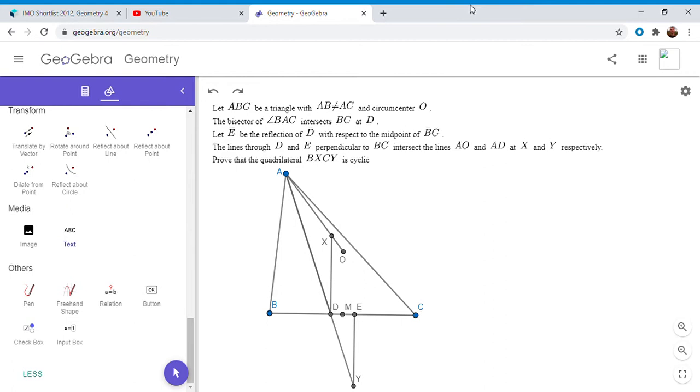It's a neat little problem that doesn't have too many initial lines and if you want to try to solve it feel free to pause the video. All right, so now I'm going to go over the solution. We have a triangle ABC with AB not equal to AC and circumcenter O. The bisector of angle BAC intersects BC at point D. E is the reflection of D with respect to the midpoint of BC. So I let M be the midpoint of BC and E is the reflection, and the lines through D and E perpendicular to BC intersect AO and AD at X and Y and we want to show that BXCY is cyclic.